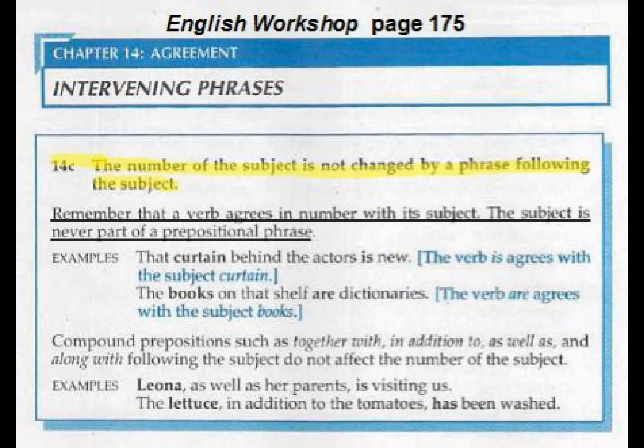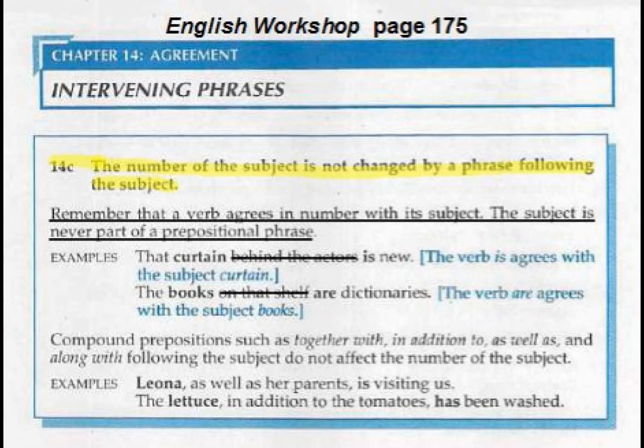Let's look at the first and second examples. 'The curtain behind the actors is new.' The verb 'is' agrees with the subject 'curtain.' Now look at the next one: 'The books on that shelf are dictionaries.' The verb agrees with the subject 'books.' Cross out the prepositional phrase 'behind the actors' so that you can see very clearly that 'curtain is new.'